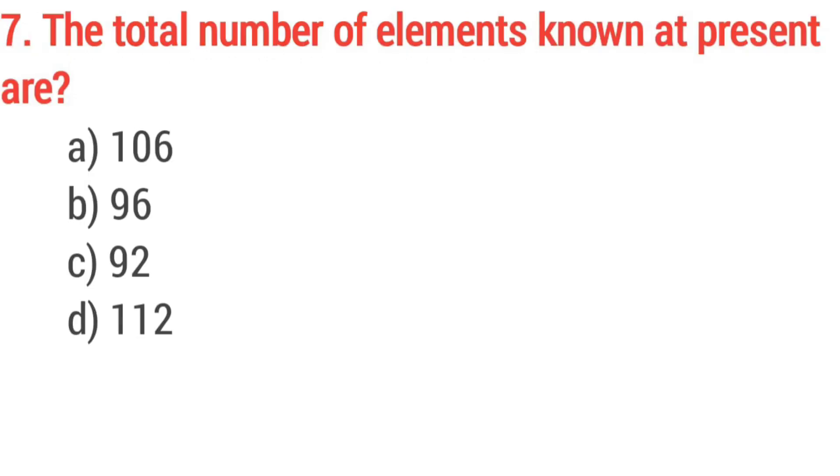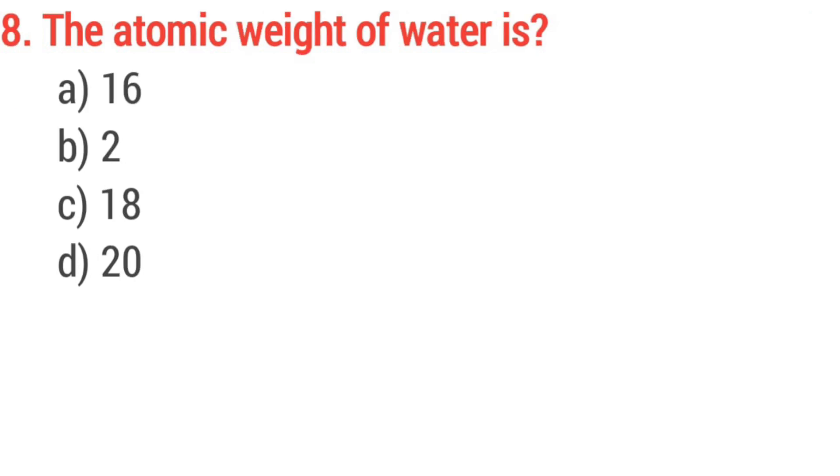Question number 7. The total number of elements known at present are? Option D, 112. Question number 8. The atomic weight of water is? Option C, 18 gram per mole.